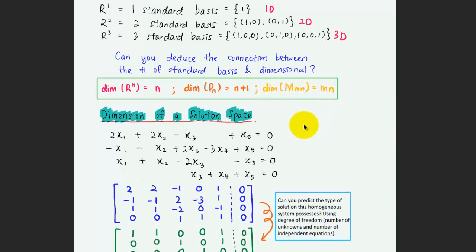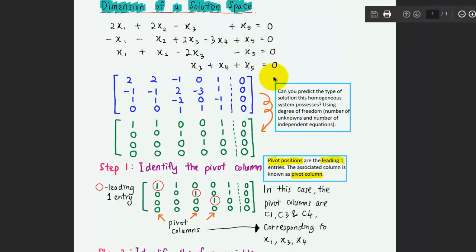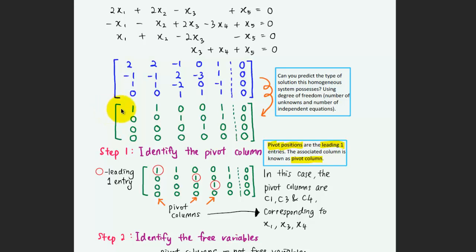Now let's look at the dimension of a solution space. If you have been given a system of linear equations, how are you going to decide how many bases you have, or what is the dimension of the solution space? The first step is to convert everything into the augmented matrix form and then reduce it into row echelon form. Based on this row echelon form, you can predict the type of solution using the degree of freedom — the number of unknowns and the number of independent equations.